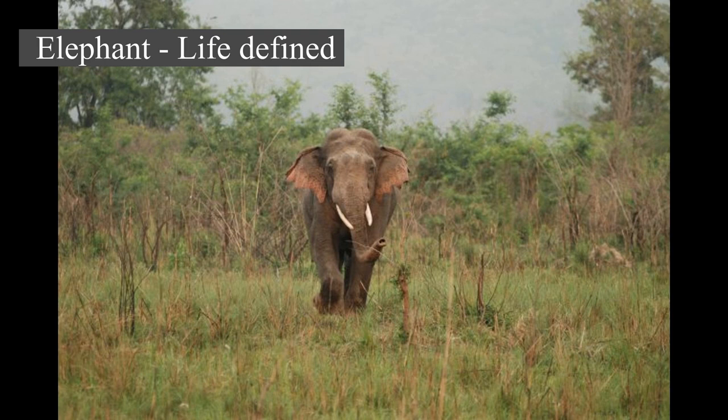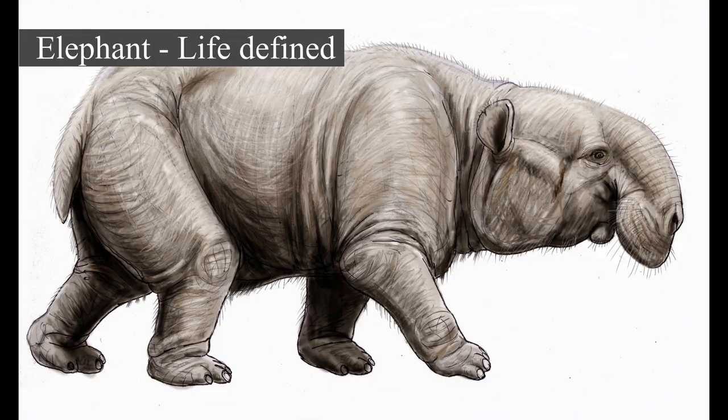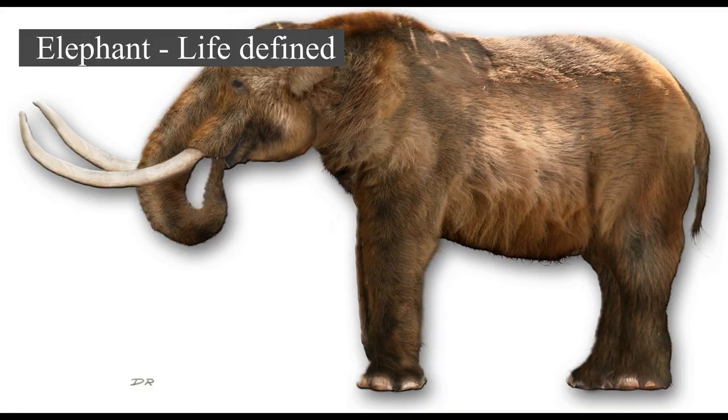Males leave their family groups when they reach puberty and may live alone or with other males. Adult bulls mostly interact with family groups when looking for a mate. They enter a state of increased testosterone and aggression known as musth, which helps them gain dominance over other males as well as reproductive success. Calves are the center of attention in their family groups and rely on their mothers for as long as three years.